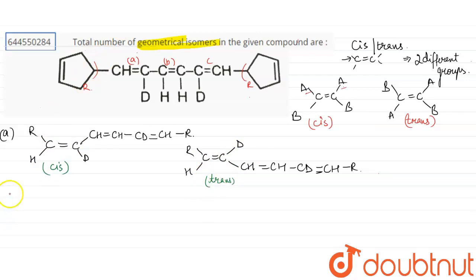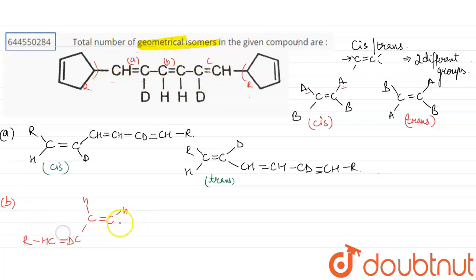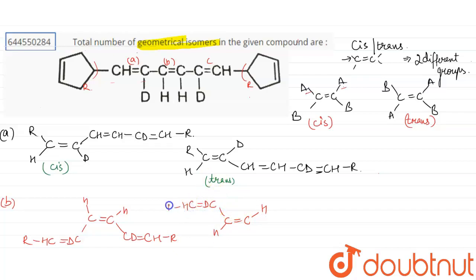For double bond B, on one carbon we have H on both substituent positions. The next isomers are drawn with CD double bond CH on each side with R groups. We can also make a structure with H in a different direction, giving another cis and another trans isomer. So from double bonds A and B we have made a total of four isomers.